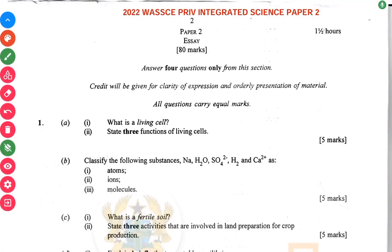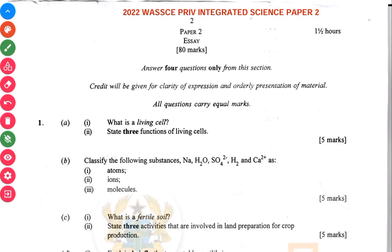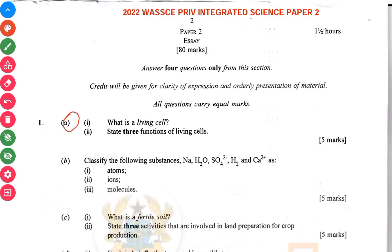So then of DEC 2020, we need to integrate a scientific part. To start with, what is a living cell? And then three functions of living cells. They're asking for functions of some specialized cells — you list a specialized cell as well as its function.